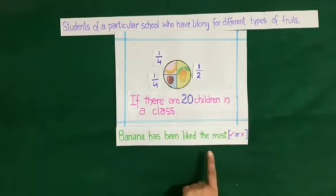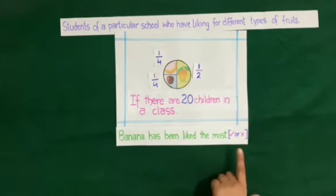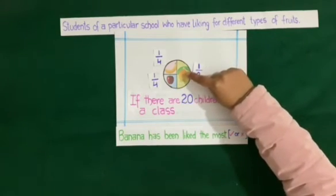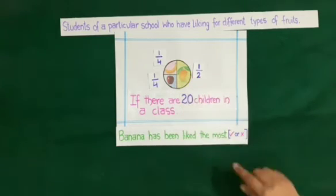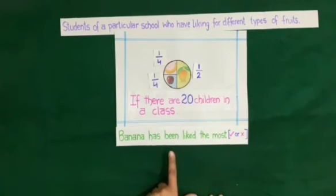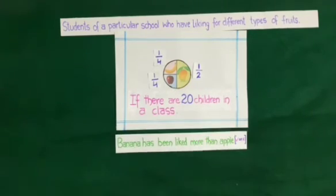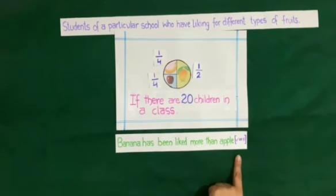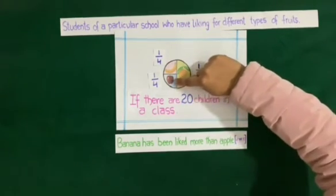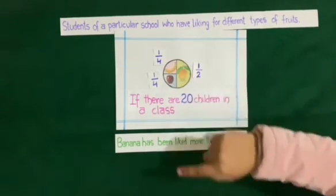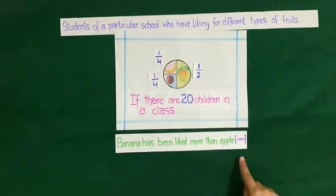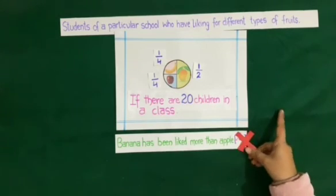Next statement: banana has been liked the most. We know that half of the students like mango, so mango is the most liked fruit. This statement is wrong — we will put a cross against it. Next statement: banana has been liked more than apple. Looking at the pie chart, apple and banana are liked by equal numbers of students. So this statement is also wrong — we will put a cross against this statement too.